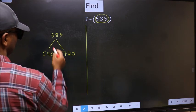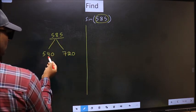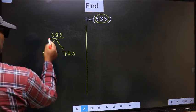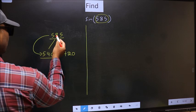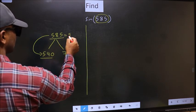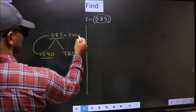Now, 585 is close to which number? This is close to 540. So, 585 now should be written as 540 plus 45.